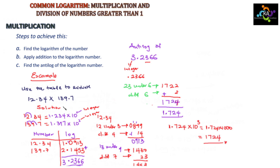Therefore, the multiplication of these numbers using the log table gives 1724. We have followed all three steps to arrive at this answer.